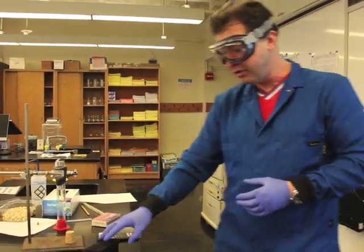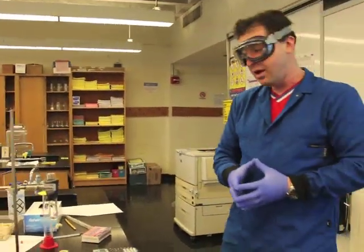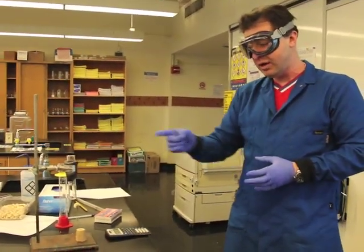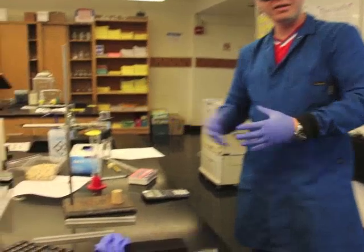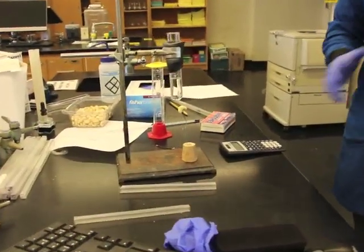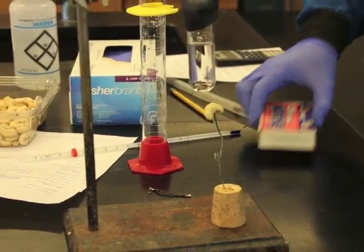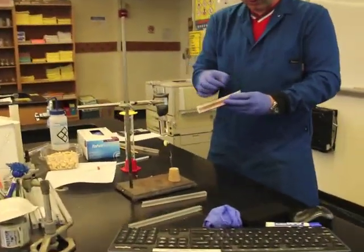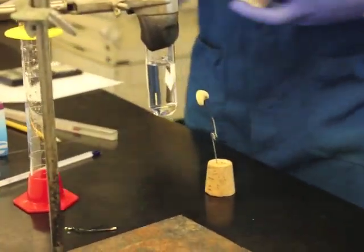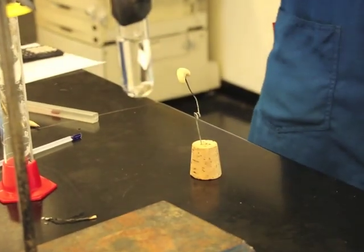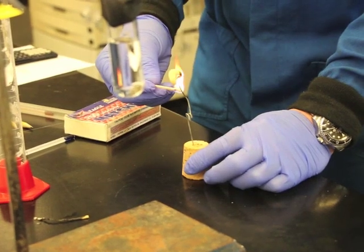This is a crude calorimeter because the entire surroundings is open, so we're going to lose a lot of heat to the surroundings, but we'll still get some crude data for the energy content of this cashew nut. I'm going to remove this from the bottom of the water because if I don't, I'll introduce additional heat from my match.